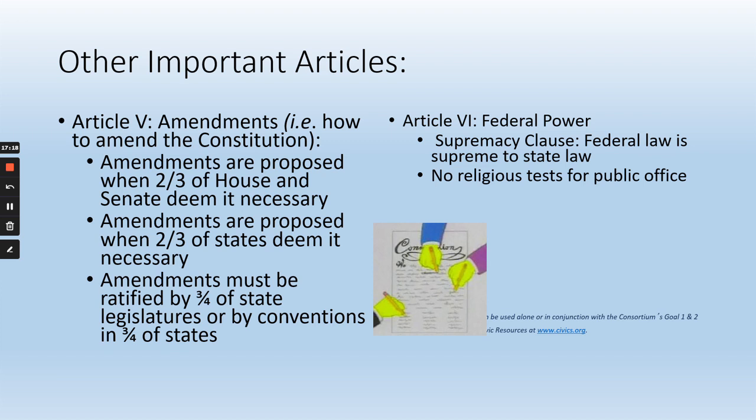Article 6 also states that there's no religious test for public office. That means in America you don't have to belong to any particular church or religious group to be elected to public office. Certainly, voters may hold a person's religion against them when it comes time to vote, but the Constitution doesn't require a person to be of any particular religious faith to hold office.